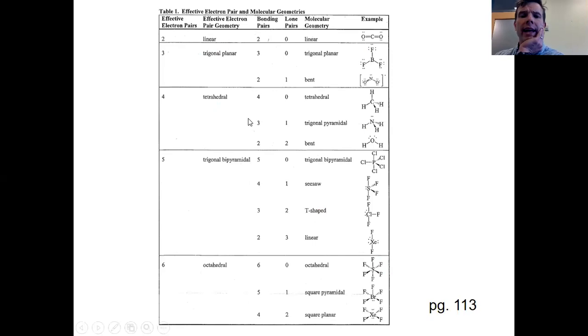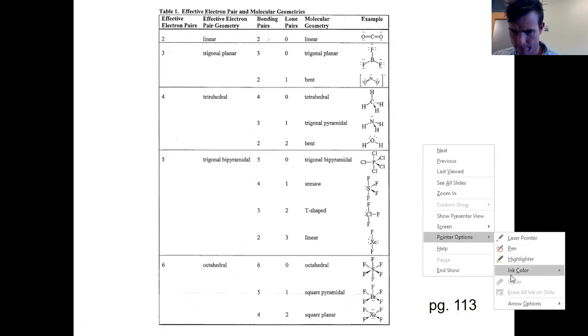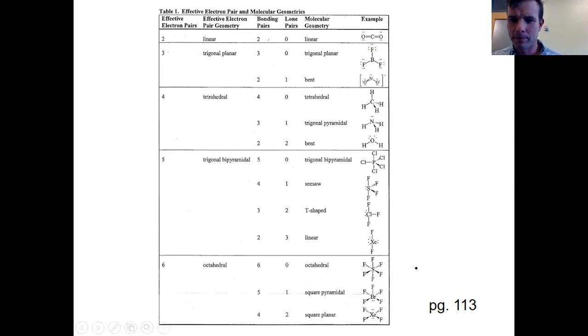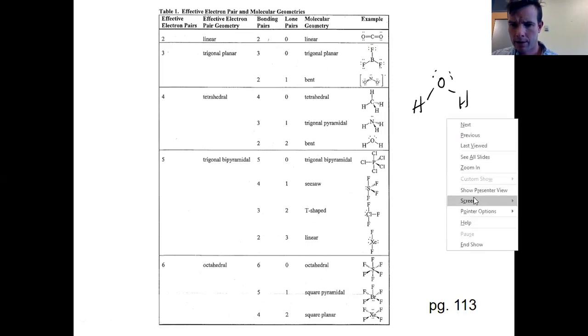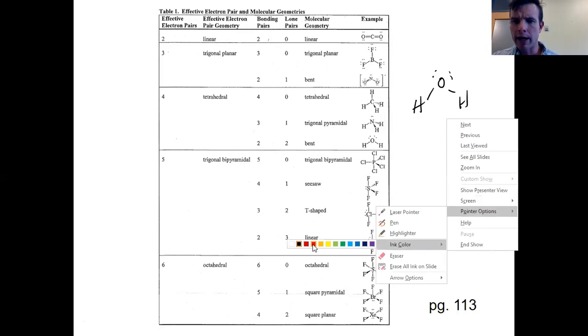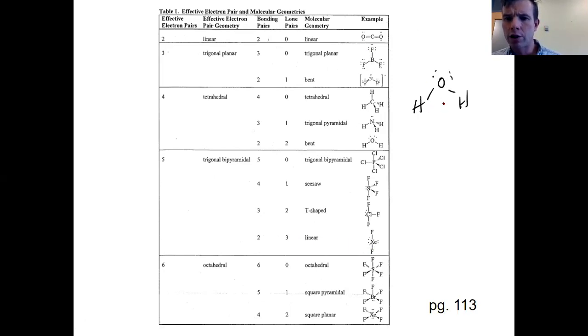When you decide that, then what you need to do is count up the number of bonding pairs and lone pairs. So let me give you an example. What I mean by that again? Here's water. We said it has four effective pairs. But if I describe those a little further, I will note that it has two bonding pairs.